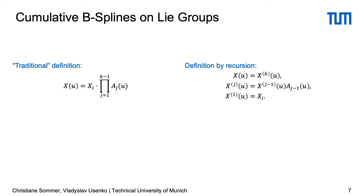Taking this definition of Lie group cumulative B-splines, we see easily that x can equivalently be defined by a recurrence relation. This is the core idea of our work, so let's see what happens if we take time derivatives in the two formulations.